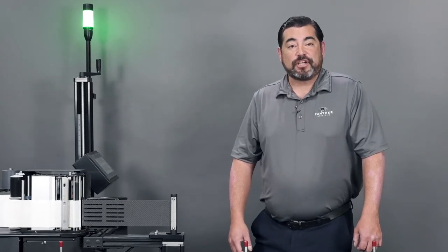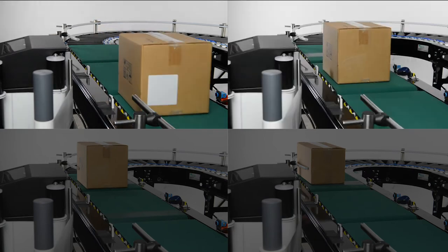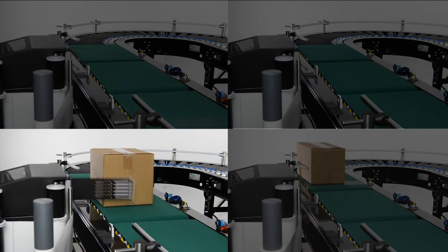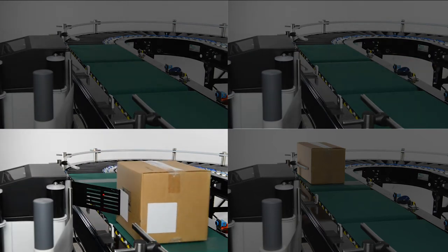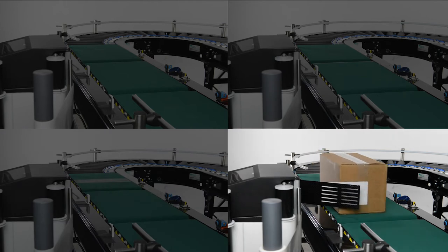With a simple programming change, labels can be applied to the front, the side, the front and side, or a corner of the carton or pallet.